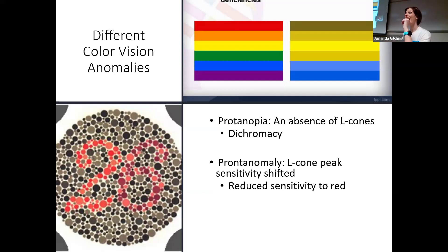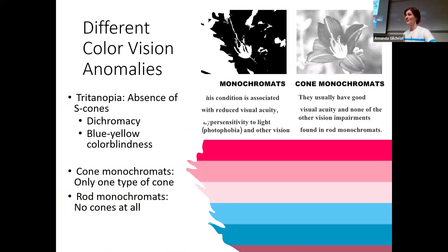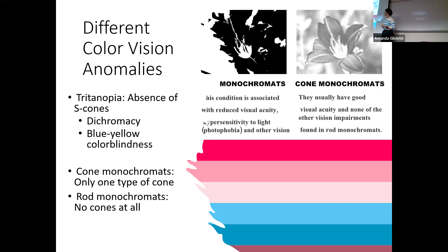What if you don't have an S cone? Welcome to tritanopia. There is no known tritanomaly, but tritanopia — having no S cones — results in dichromacy with blue-yellow color blindness. With tritanopia, the world would appear in shades of blue and pink, meaning you can't see red and green.